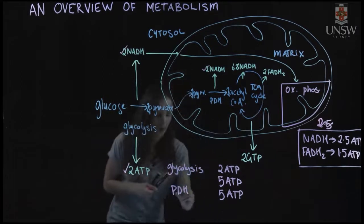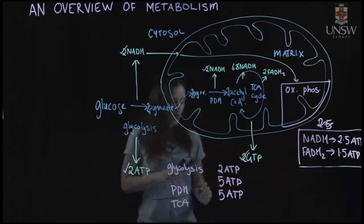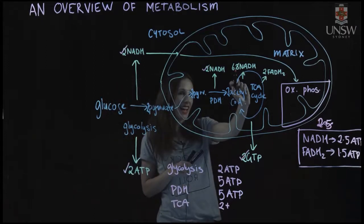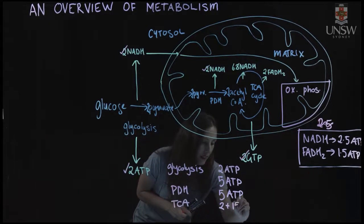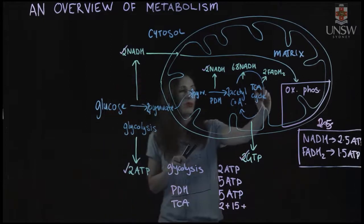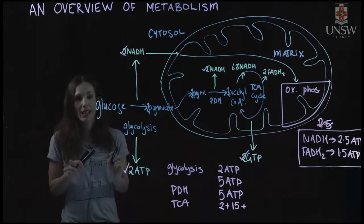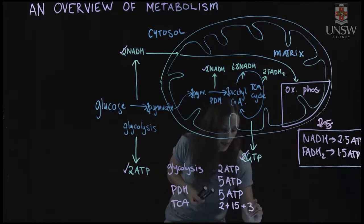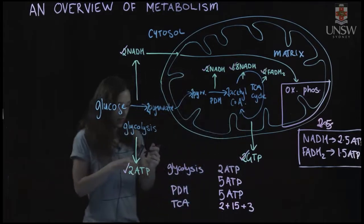In the TCA cycle, we have our 2 GTP, which we count as 2 ATP equivalents. We have our 6 NADH: 6 × 2.5 gives us 15 ATP. Then we have our 2 FADH2 — remember, FADH2 enters the electron transport chain at complex II and generates less of a proton gradient to power ATP synthase, so we multiply by 1.5, giving us 3 ATP.